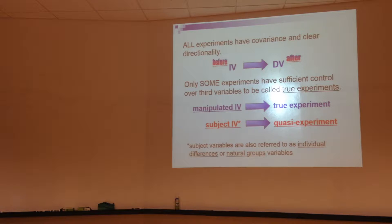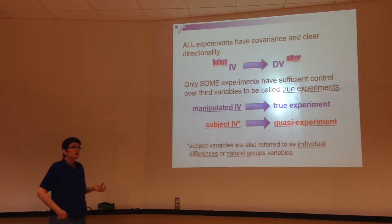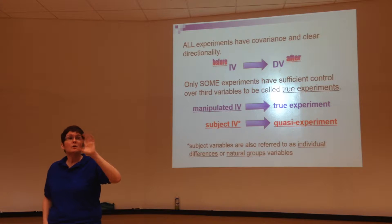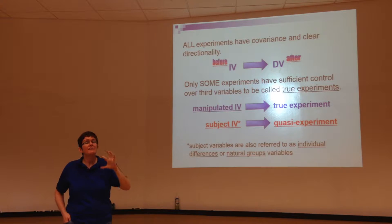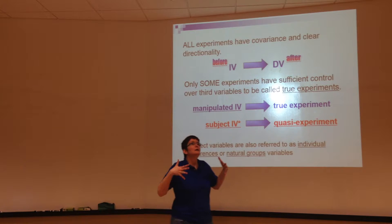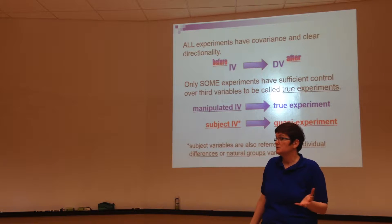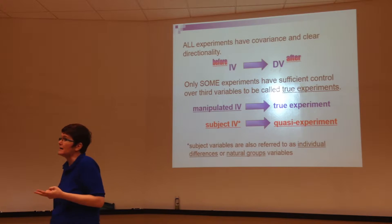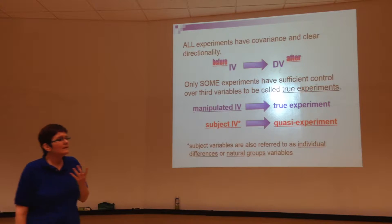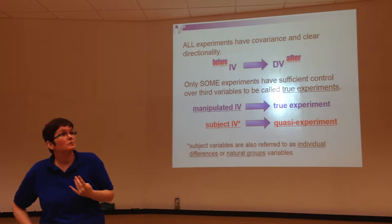If the researcher truly controls the independent variable — meaning they're able to randomly assign subjects to the different levels of that variable, or randomly order those conditions — then we say that independent variable is a manipulated variable, and we have a true experiment. If, on the other hand, the independent variable represents a naturally existing set of groups — for example, Republicans, Democrats, Socialists, and Independents — those are naturally existing groups, and as a researcher I can't randomly assign you to be a Democrat today.